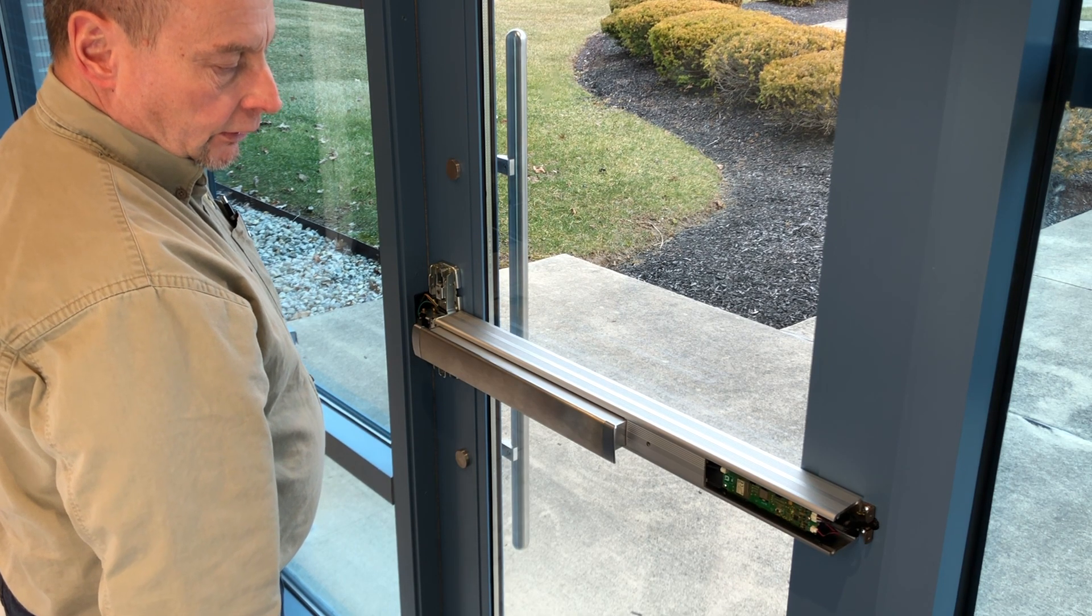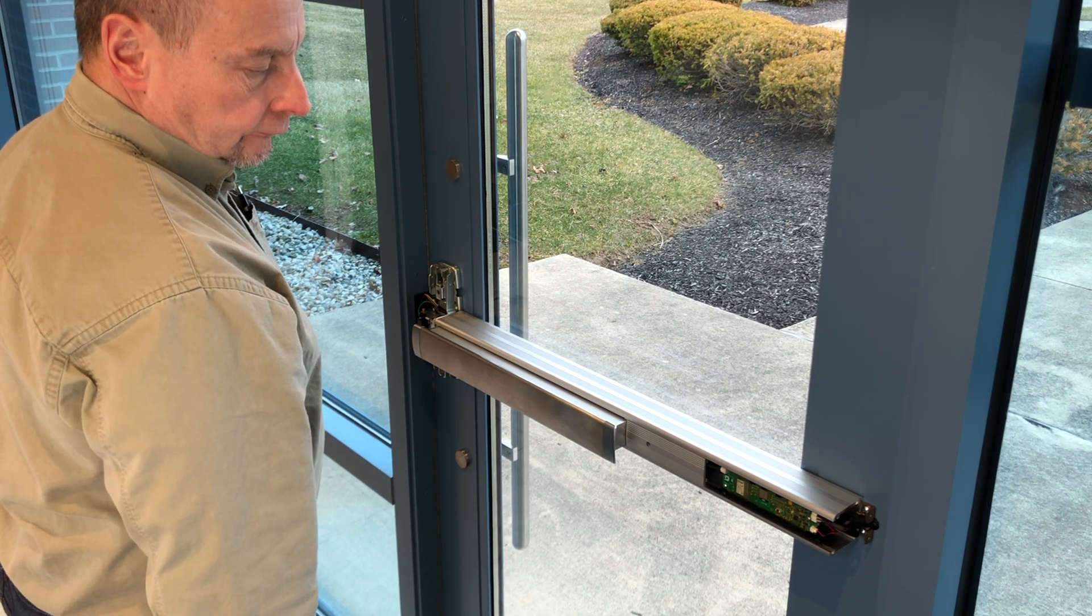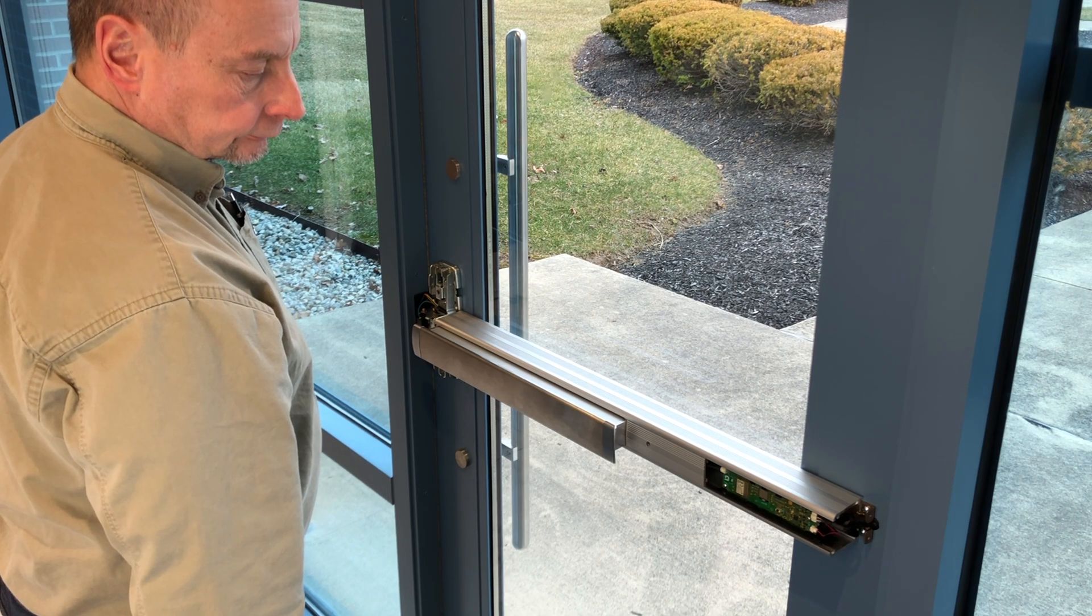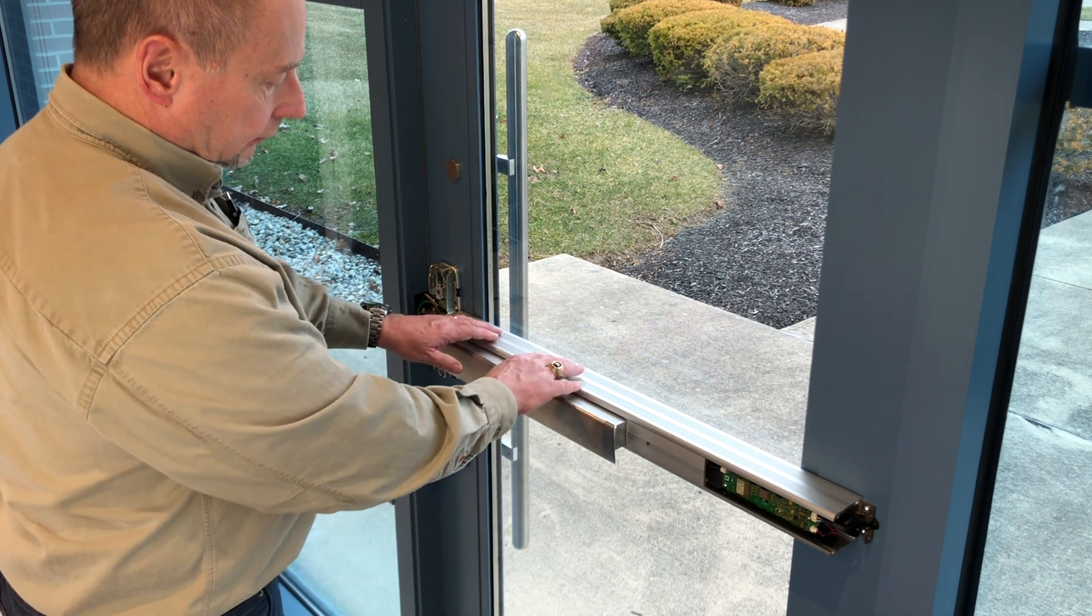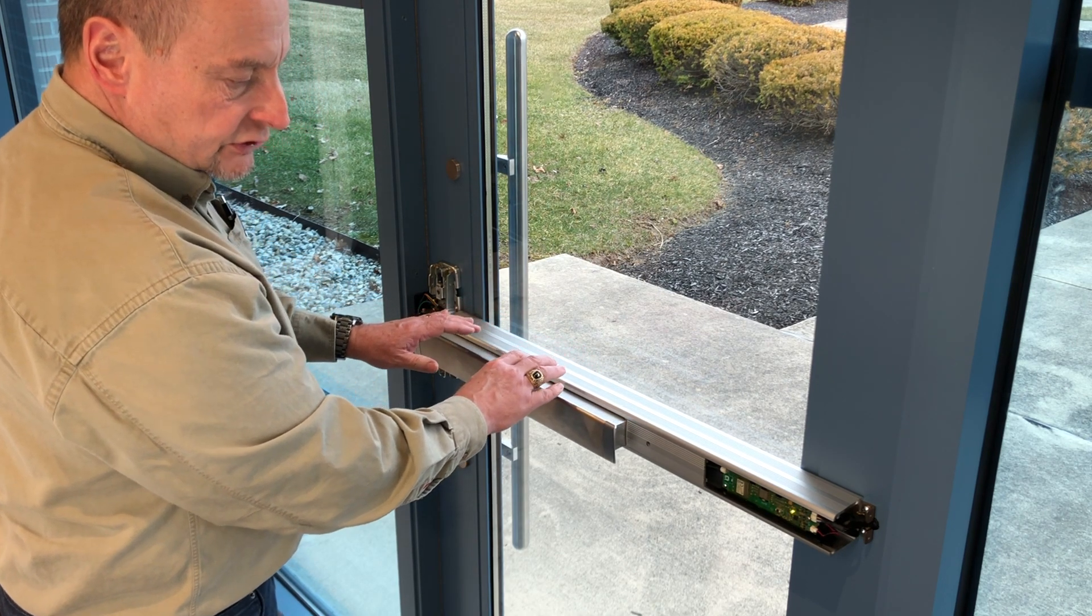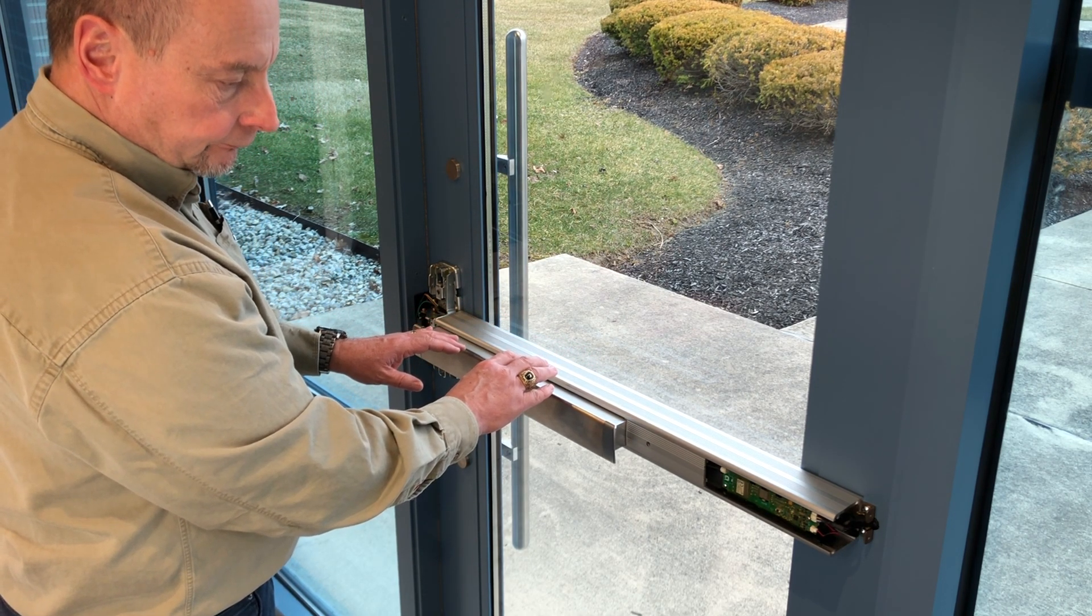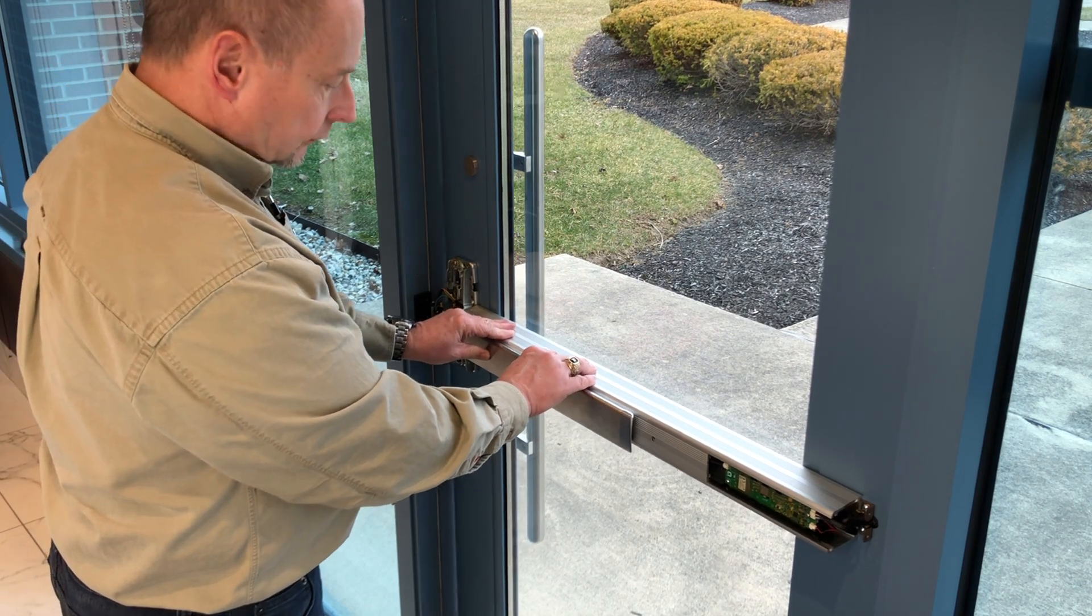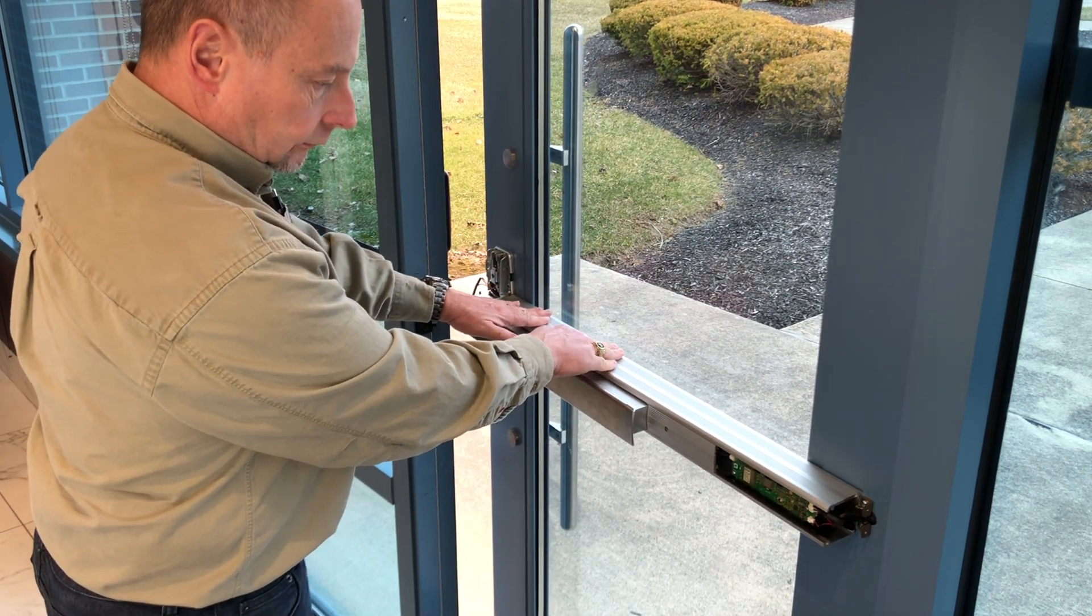The power-up is complete. To test the request to exit switch, press the pushpad and confirm the light flashes red or amber. Release and confirm another flash. For the door position switch, open the door and listen for a beep. Close and confirm another beep.